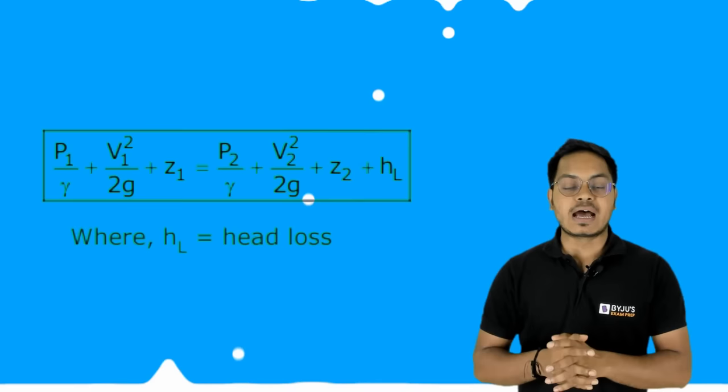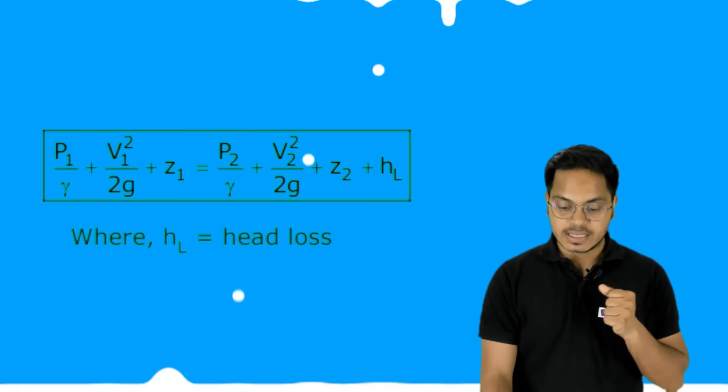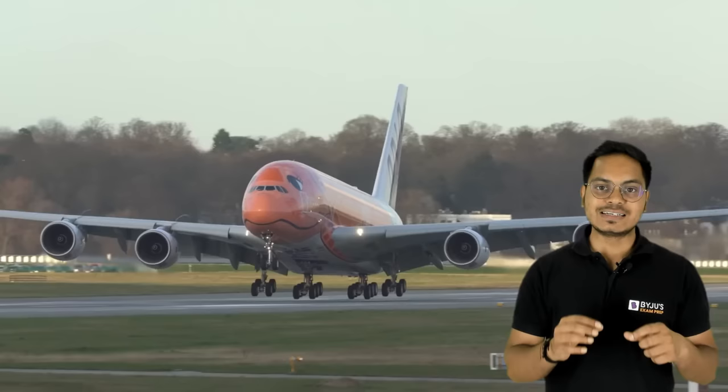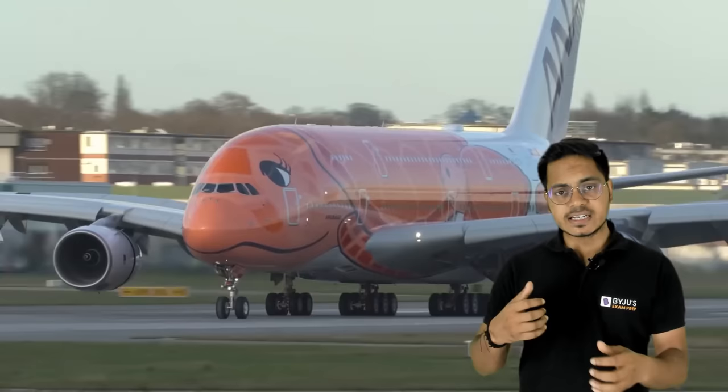One important thing to note: Bernoulli's equation says total energy is constant, but in the real world energy always has losses. When flow takes place from one point to another in a pipe, there is energy loss that must be considered. When applying the equation between two sections of a pipe, the energy at section one equals the energy at section two plus the head loss between them.